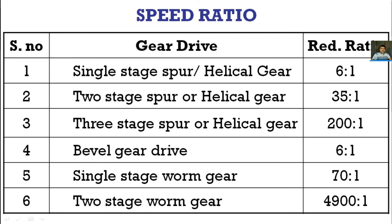The left side figure indicates the speed of the driving member and the right side figure indicates the speed of the driven member. If you consider three stages in spur gears or helical gear drives, you can get a maximum speed reduction ratio of 200:1 — meaning you can reduce the speed by 200 times. These gear drives are for parallel shafts; the shafts are oriented in parallel directions, and you can transmit power using spur gear or helical gear, getting speed reduction ratios from 6:1 up to 200:1 by increasing the number of stages.